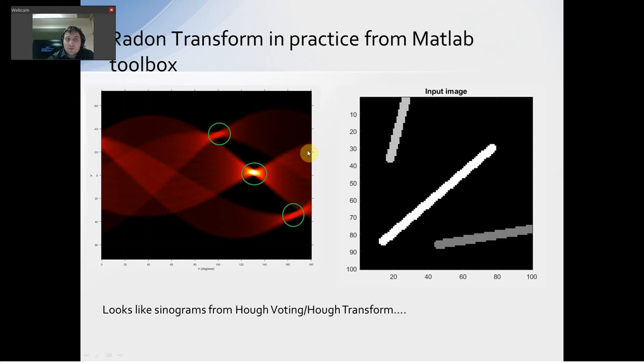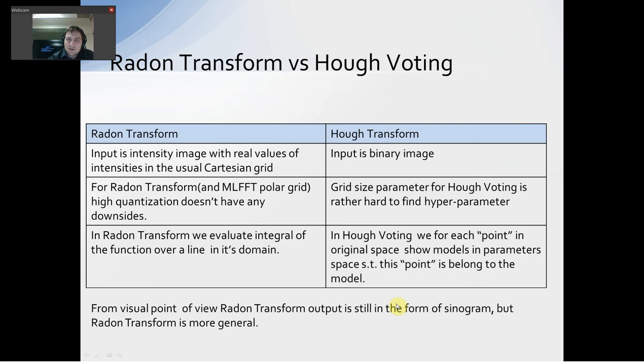Matlab contains a default implementation of Radon Transform. If we use it for this input image, we will see something like this. And it looks like a sinogram for Hough voting. But Radon Transform and Hough voting is, as I understand, completely different things, completely different algorithms.